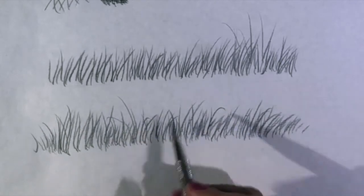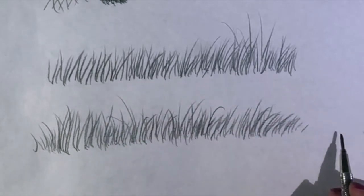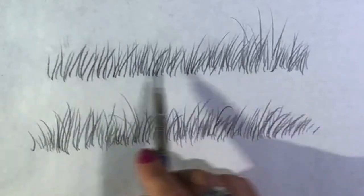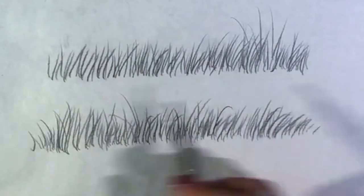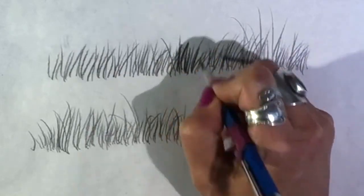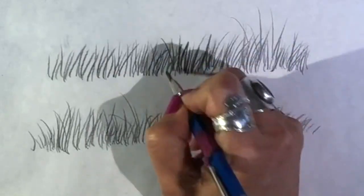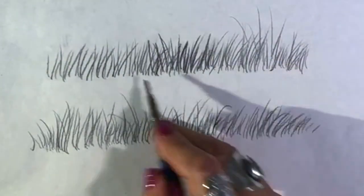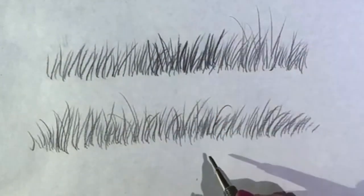Give it some space. I'm going to talk about one more thing with this grass. Notice that this grass has similar value. Now you can also add variety of value so that pieces are darker in certain areas and this gives a sense of depth. You can see how that's working there.